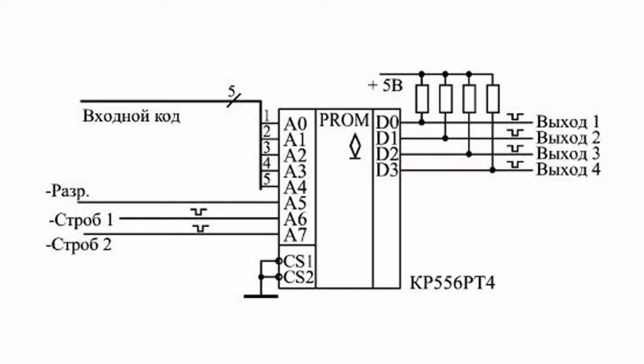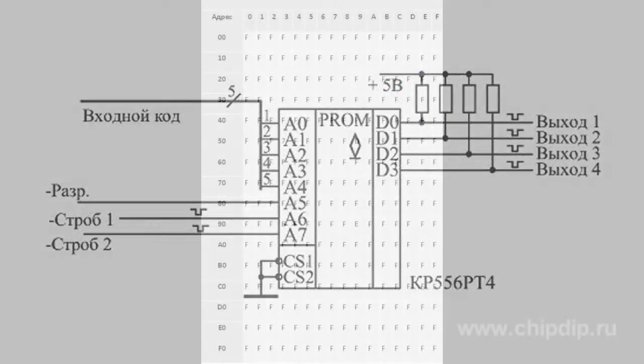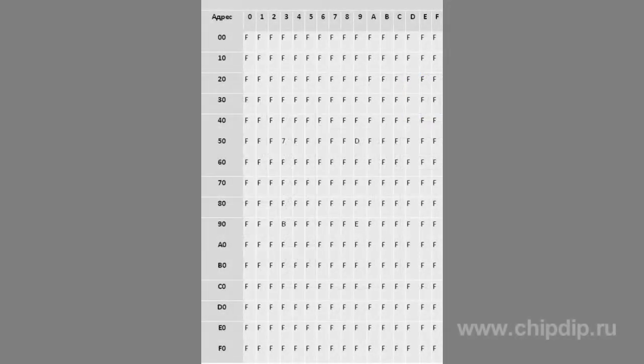The ROM chip is always selected — that is, the control signals CS1 and CS2 are held at 0. The data memory outputs have connected resistors because the RT4 output type is that with the common collector.